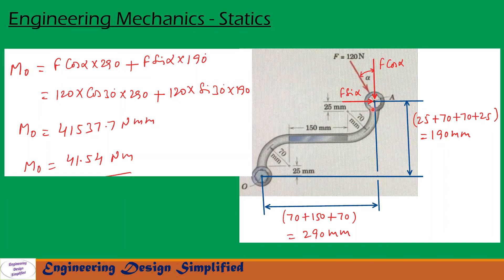These two force components will create a clockwise moment about O. The horizontal distance from O to A is 70 plus 150 plus 70, which equals 290 mm. The vertical distance from O to A is 25 plus 70 plus 70 plus 70 plus 70 plus 25 — wait, that totals 190 mm, comprising the 25 mm segments at each end and the radii of 70 mm in between.